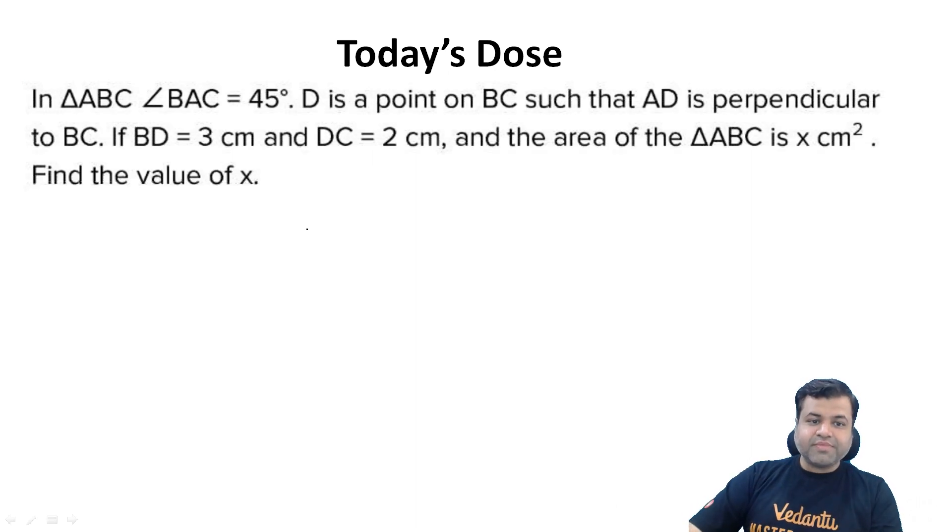The question is that in triangle ABC, angle BAC is 45 degrees. D is a point on BC such that AD is perpendicular to BC. If BD is 3, DC is 2, and the area of triangle ABC is X, we will find the value of X.